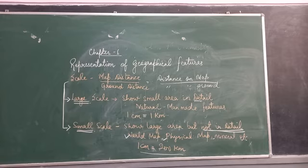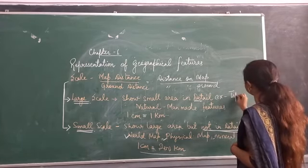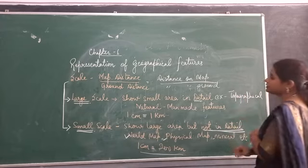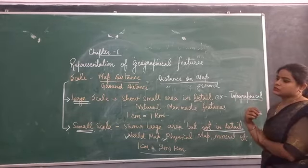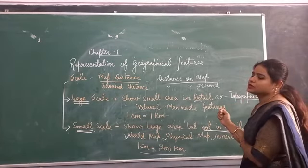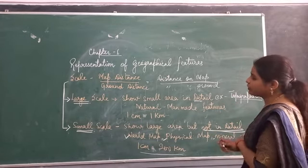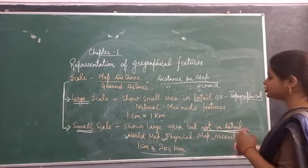An example of a large scale map is the topographical map. The topographical map is the kind of map which shows particular things about any area in large detail.